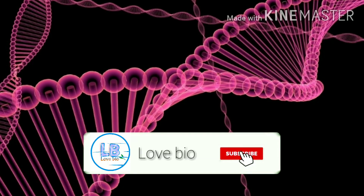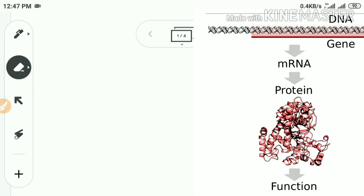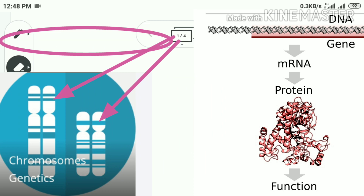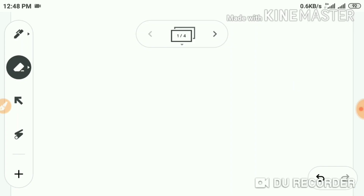Genes are nothing but segments of chromosomes. Each segment or gene carries information for the synthesis of a specific protein. We can say the recipe to synthesize a specific protein is written in the specific gene — so each gene is a recipe. In this way, different genes are assigned for different proteins.